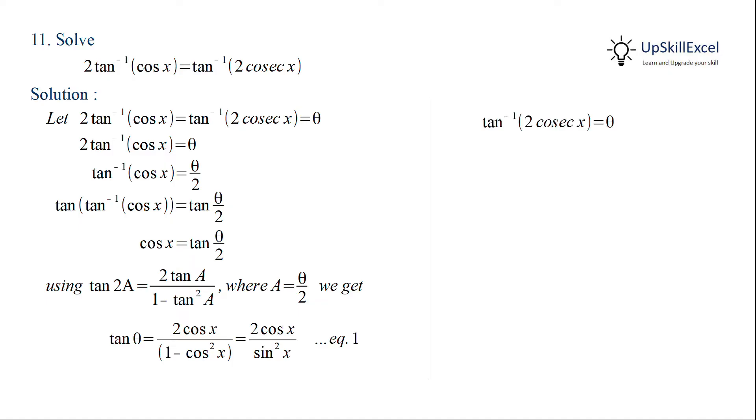Solving for the right hand side, we get tan inverse 2 cos x x is equal to theta. Applying tan on both sides we get 2 cos x x is equal to tan theta.